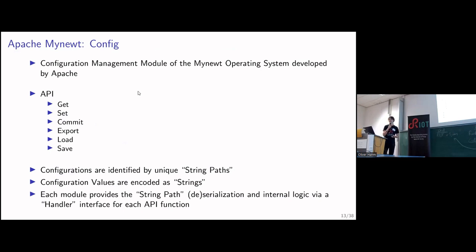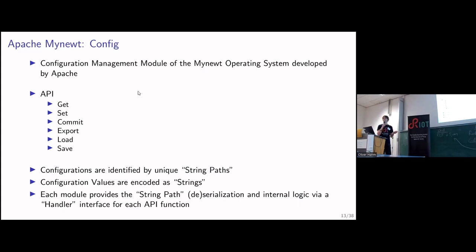This is Apache Mynewt's config system. It's very simple — get, set, commit, and export functions. The get and set functions let you read and write configuration parameter values. Commit lets you apply these values so they are put into action. With export we can list what kind of parameters are available in your system. Apache Mynewt uses strings to identify configuration parameters.